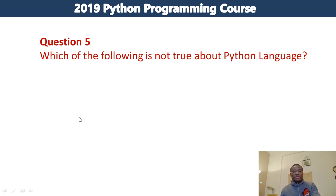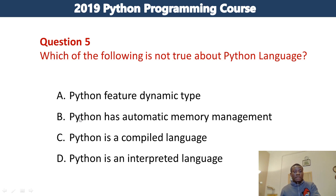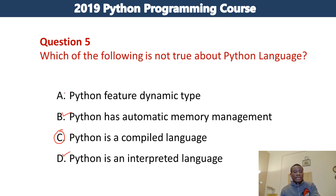Which of the following is not true about Python language? A, Python features dynamic type. B, Python has automatic memory management. C, Python is a compiled language. D, Python is an interpreted language. The answer to this question is C. Python is not a compiled language — Python is an interpreted language. Python has automatic memory management and Python features dynamic type.